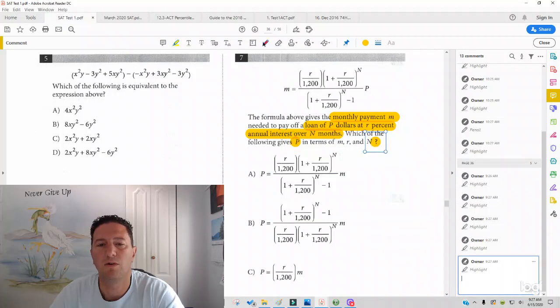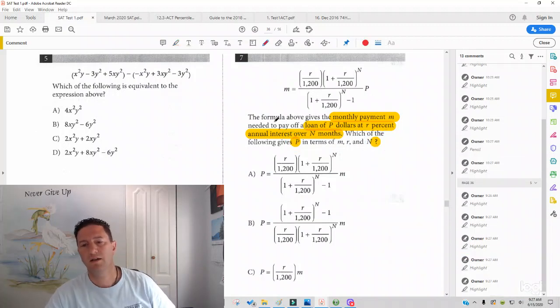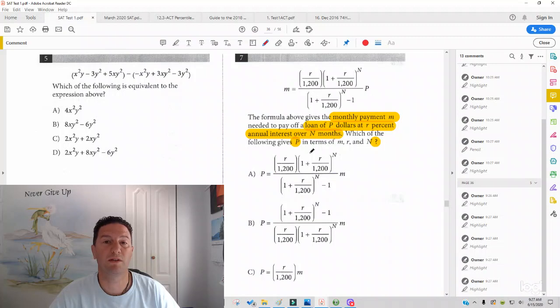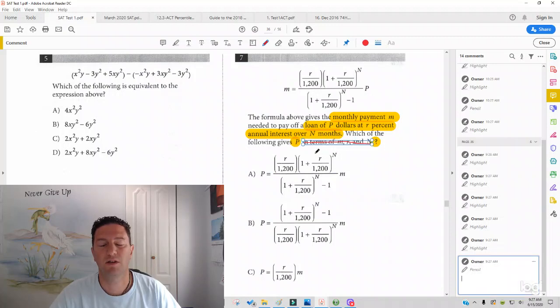So, one thing you may notice is that you should always underline what the variables stand for, underline the important information. One thing that sometimes confuses students with this type of problem is where it says in terms of. So here it says in terms of M, R, and N. If that confuses students, just ignore it. It says which of the following gives P. All you have to do is get P alone.